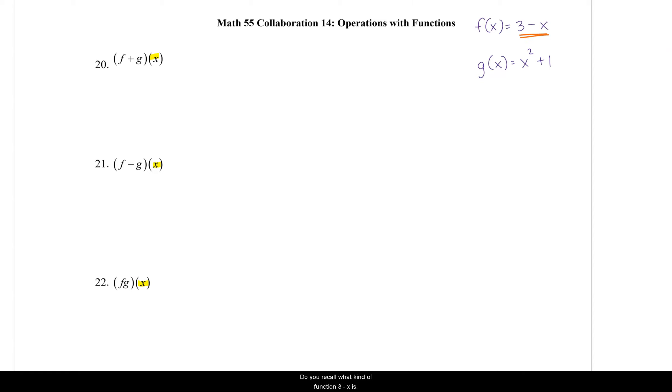Do you recall what kind of function 3 minus x is? 3 minus x is linear. y equals mx plus b. m would be negative 1 and b would be 3. The highest power on x is 1. For g(x), g(x) with that x squared there, g(x) is a member of the quadratic family. But both of these are subfamilies in the much larger family of polynomials. Or the much larger, broader class of function known as polynomials.